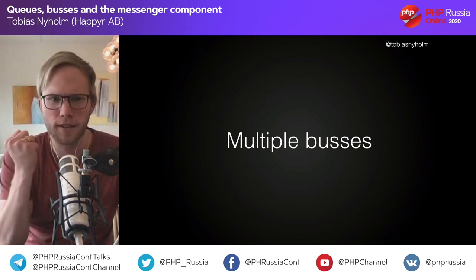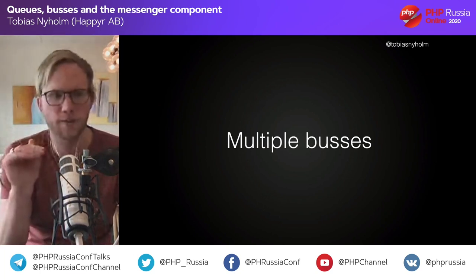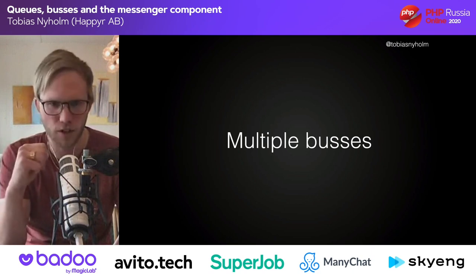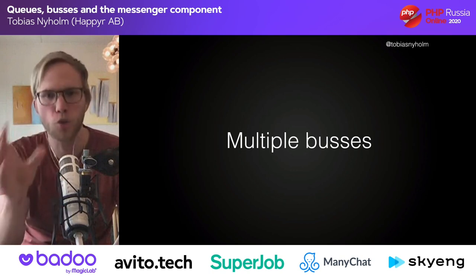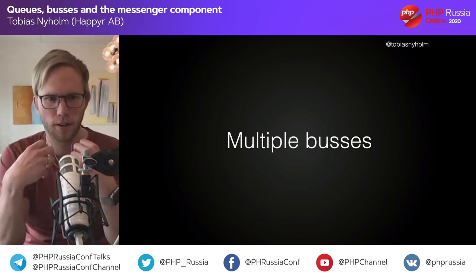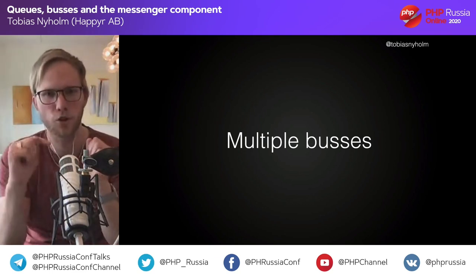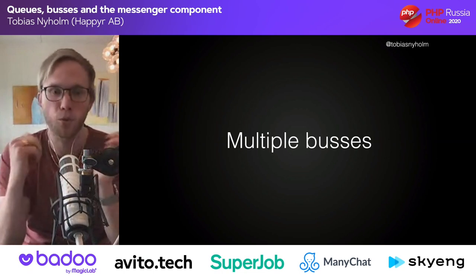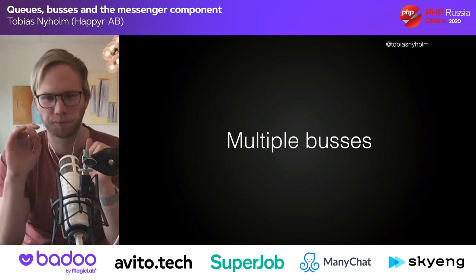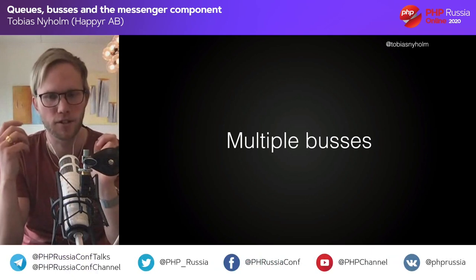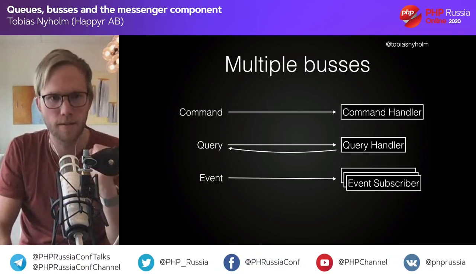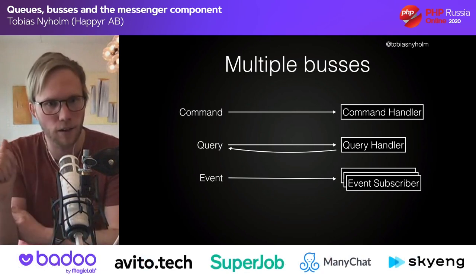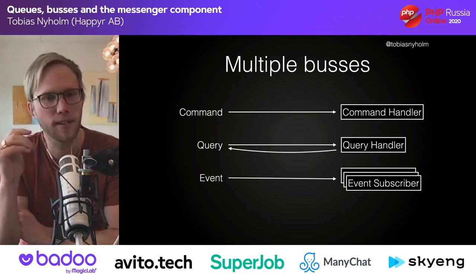I want to share something about CQRS — Command Query Responsibility Segregation. A command is a thing that does something; a query is a thing that fetches something. You can never have something that updates a value and returns it — it should always do one or the other. I'm also a big fan of separating commands from reactions. So I've created three message buses: a command bus with exactly one command handler, a query bus with exactly one query handler that returns data, and an event bus with zero or more event subscribers.